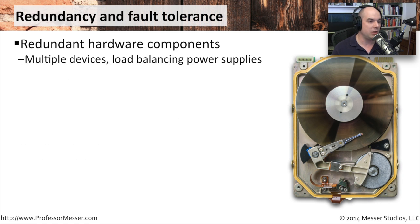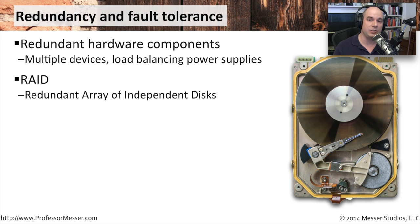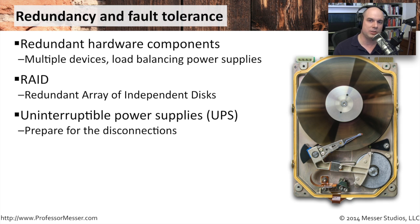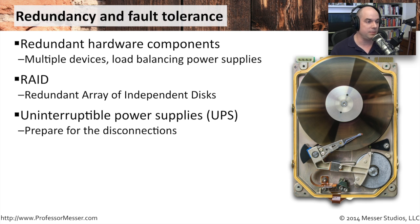Redundancy and fault tolerance means we need redundant hardware components — multiple power supplies, multiple devices, and multiple disks. Within a single server you can have RAID, a redundant array of independent disks, so that if we lose one disk, the system stays up and running without anyone ever knowing there was a problem. Another important piece of hardware is an uninterruptible power supply, or UPS. These have batteries to keep things running if we lose power, and are extremely valuable in environments where power is unreliable.